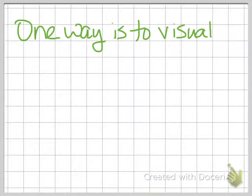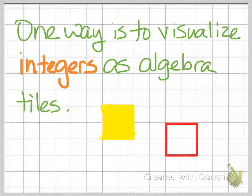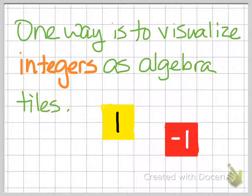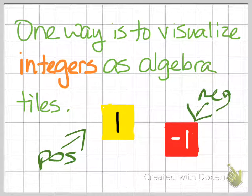One way to look at this we're going to start with is visualizing integers with algebra tiles. Remember that with algebra tiles, yellow ones represent positive numbers and these represent negative numbers. That's really important.